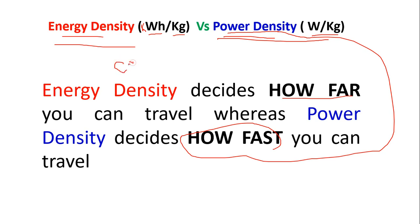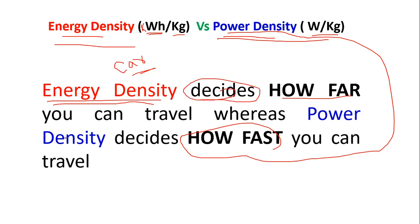Let me take the example of a car. If you have a car and you wish to go far away, you need great energy density, because energy density tells you how far you can travel. Whereas power density tells you how fast you can travel. So if you are accelerating, that is all about power density, but if you are going far away, that is all about energy density.